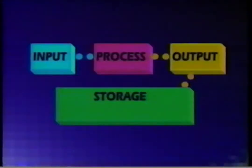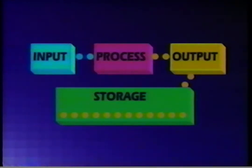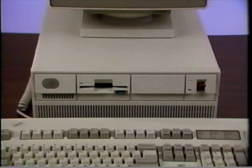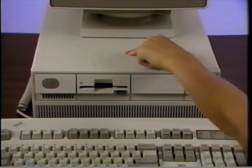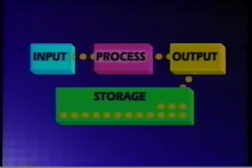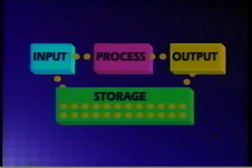There is one more important computer basic to understand: information storage. One of the reasons computers are so powerful and valuable is that they can store huge amounts of information — millions of records, pages of text, graphs, figures, virtually any kind of information. Information is put in storage after passing through special output equipment used for storage, and can be stored on a floppy disk or a hard disk inside the computer, then quickly retrieved back into the computer.